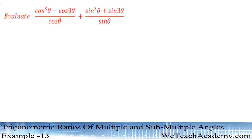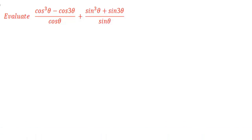The given example is: evaluate the value of cos³θ minus cos 3θ divided by cos θ, plus sin³θ plus sin 3θ divided by sin θ. By observing the numerators, we have cos 3θ and sin 3θ, which are in the form of cos 3a.